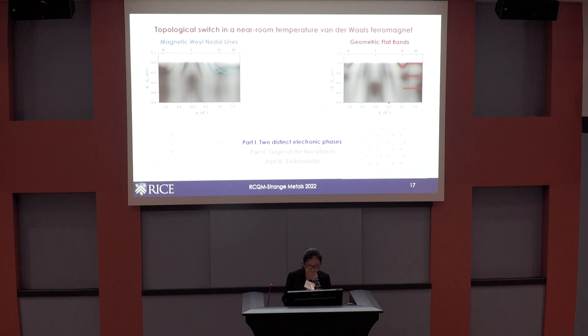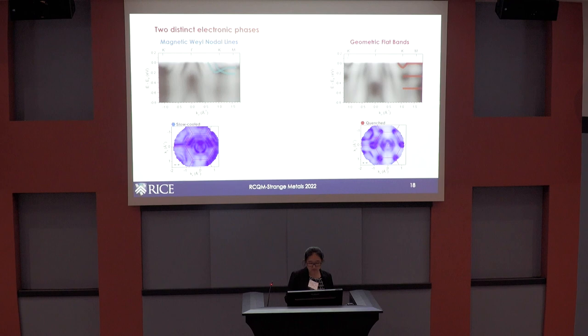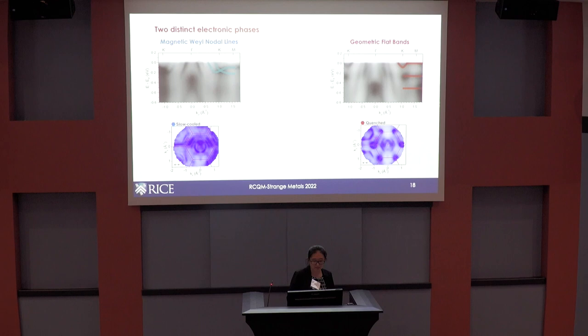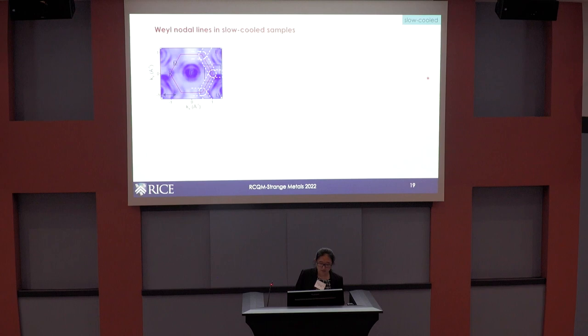Side by side are measurements on a slow-cooled crystal and a quenched crystal, taken under exactly the same conditions of temperature and polarization. You can already see that the Fermiology has some resemblance — concentric circles around the gamma pocket from hole-like bands — but there are clear distinctions. I'm going to take you through each and show you the key differences in the two types of electronic structures.